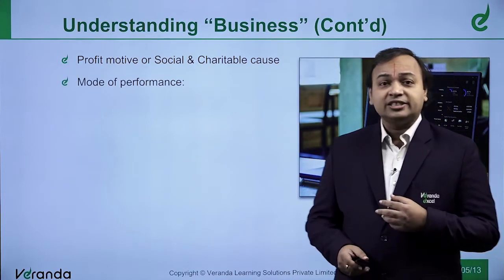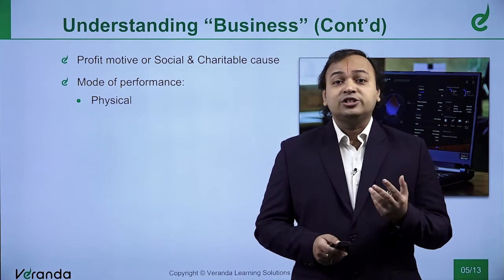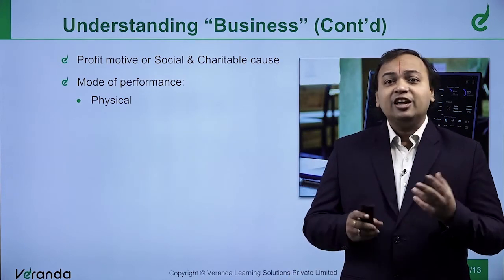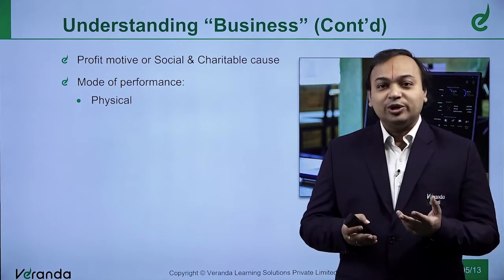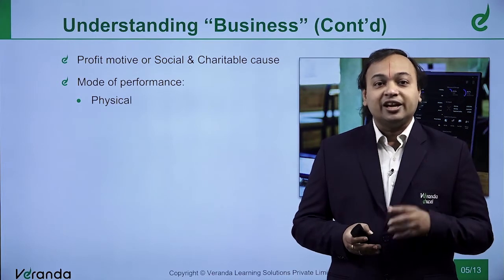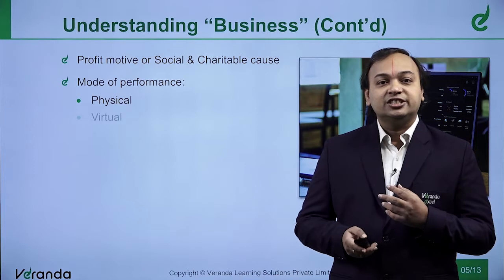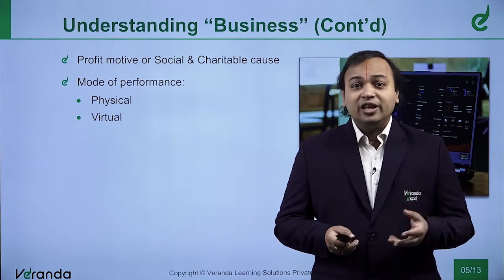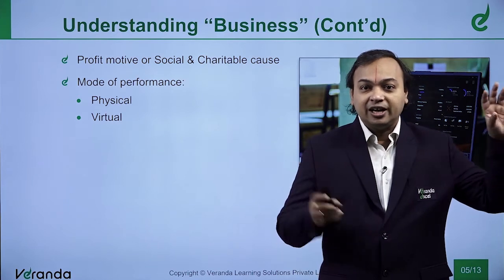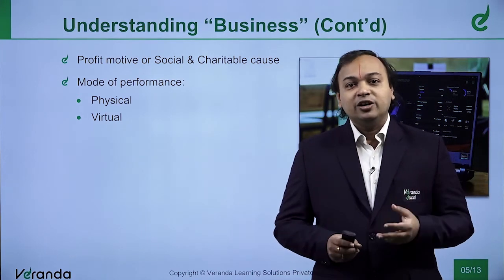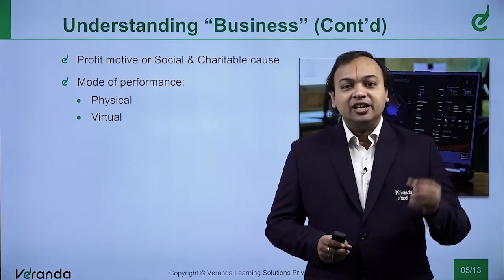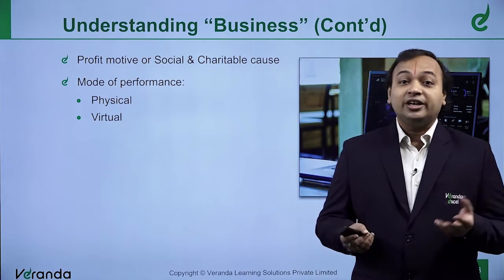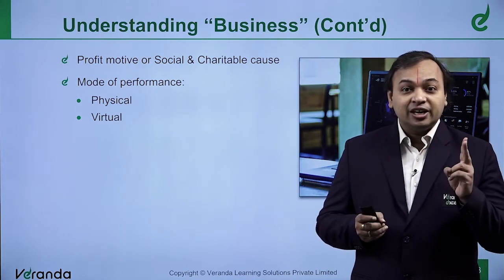The next thing to understand is the method in which businesses are performed. It may be physical — like a vegetable market, where the buyer and seller are in the same place and there is a product or service available. That is called the physical mode. Next is virtual. The stock market is the best example — you do not see the buyer or seller. If you want to sell, you tell the system so-and-so shares at a particular rate, and a transaction happens. The buyer similarly puts in a buy call with the share name, number of units, and rate.